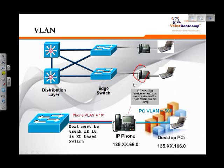A VLAN, in Cisco Unified Communications, comes in two types: a data VLAN and a voice VLAN. The goal of the data VLAN is to ensure that PC traffic is carried over the data VLAN. And the goal of the voice VLAN is to ensure that the phone's traffic is carried over the voice VLAN. The question then becomes: how does the switch know which traffic is which?